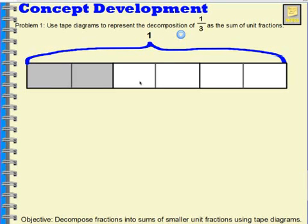One, two, three, four, five, six. So what I can see is that one-third, which is what I had before, is the same amount. It is equivalent to two-sixths.